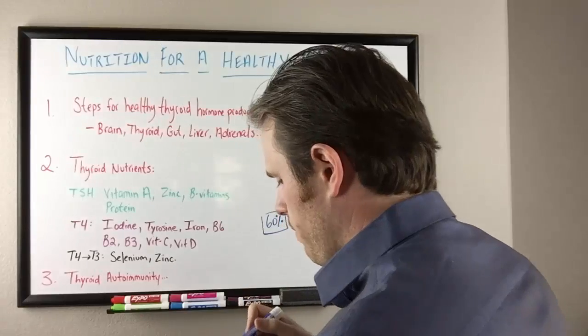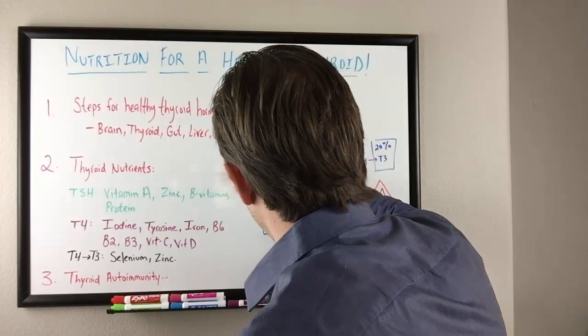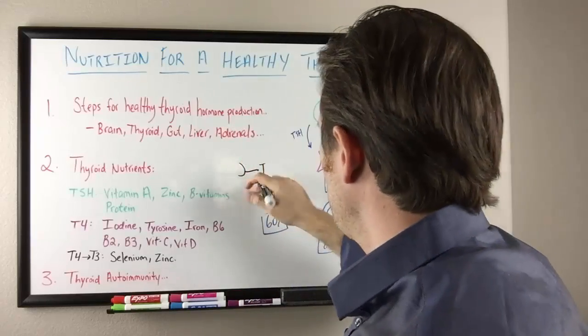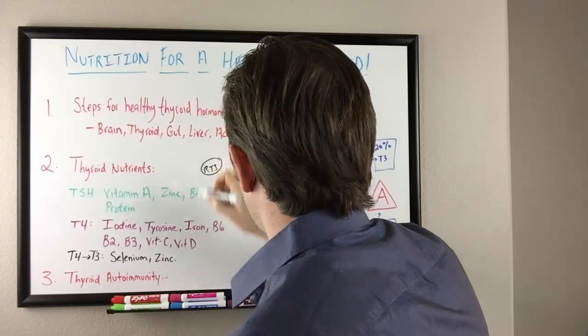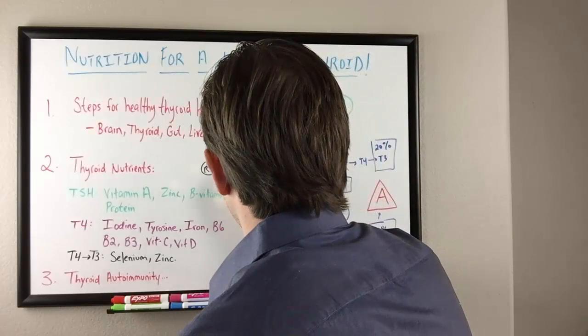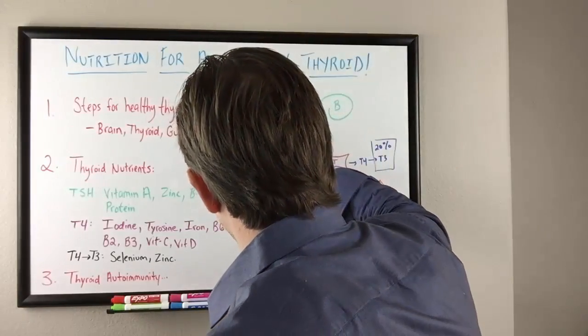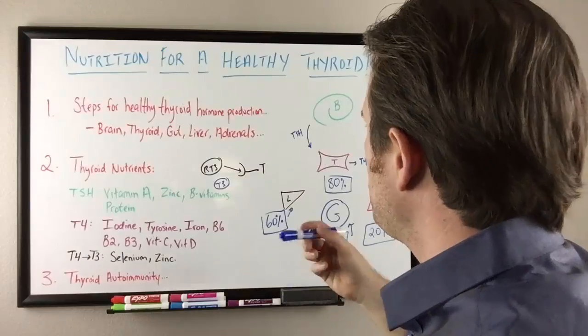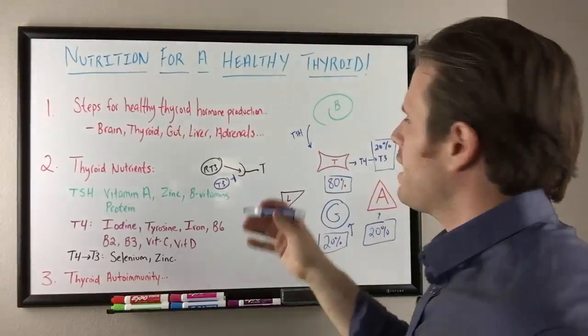So inactive T3, imagine this being our receptor site here. This is our receptor site for our thyroid hormone. That's our cell. And if this is reverse T3 here, and let's just draw a molecule here of T3, what happens is this reverse T3 molecule gets in the receptor site, doesn't have the same metabolic effect of the T3. So the T3 can't make its way into the receptor site because the receptor site is blocked.